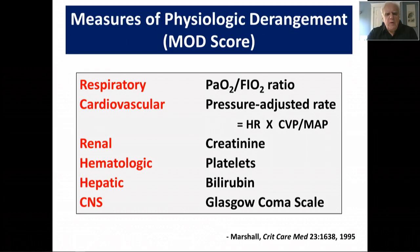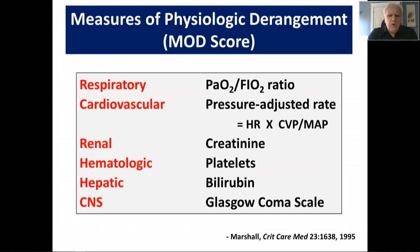We've tried to get around the problem of describing organ dysfunction as the need for therapy in the multiple organ dysfunction score, but even here it doesn't really accomplish the same goal. The renal marker creatinine can be altered by dialysis. The cardiovascular parameter will be impacted by the use of vasoactive medications as well. The Glasgow Coma Scale is impacted by the use of sedative agents. So we have this intertwining of deranged physiology and the doctor's response to that deranged physiology that makes the description of organ dysfunction particularly challenging.